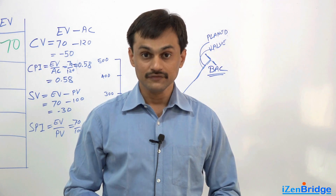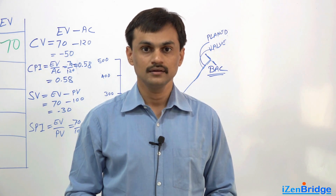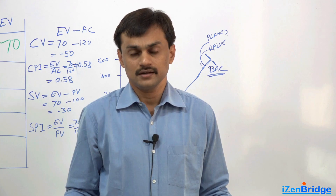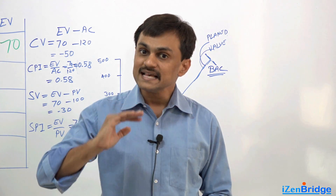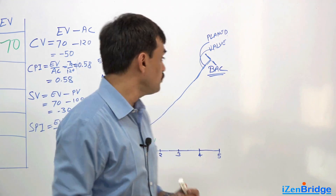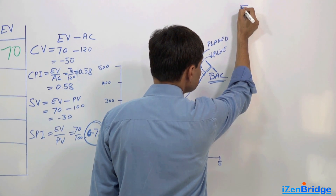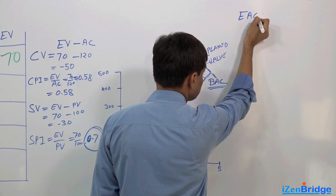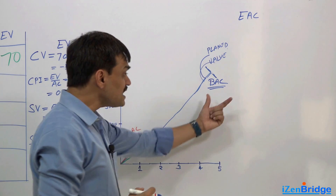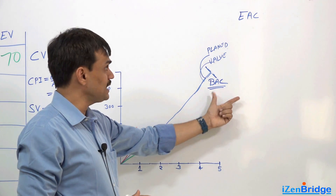But after knowing the reality, we need to tell what the budget at completion is going to be now, and this is called estimate at completion. So we are figuring out what our estimate at completion is now. Budget at completion was the original baseline — the original cost baseline. Estimate at completion is based on today.